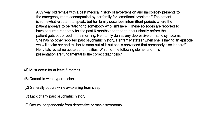Her family denies any depressive or manic symptoms. She has no other reported past psychiatric history. Her family states, 'when she's having an episode, we will shake her and tell her to snap out of it, but she's convinced that somebody else is there.' Her vitals reveal no acute abnormalities. Which of the following elements of this presentation are fundamental to the correct diagnosis? A) Must occur for at least six months. B) Comorbid with hypertension. C) Generally occurs while awakening from sleep. D) Lack of any past psychiatric history. Or E) Occurs independently from depressive or manic symptoms.